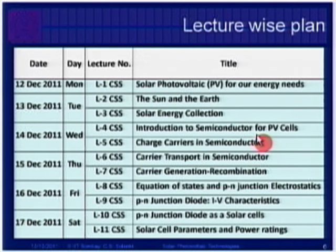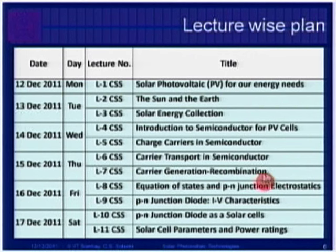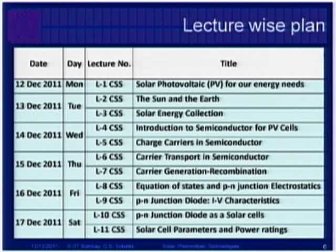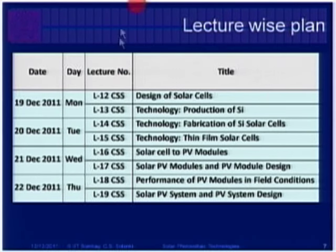Then we go on to introduction of semiconductors for solar cells, charge carrier transport — how electrons move in a semiconductor — and how electrons and holes are generated. We cover carrier generation and recombination, the reverse process of generation, then the p-n junction device and how it acts as a solar cell. We come to the application side — the main parameters of a solar cell, how to optimize and quantify them, and how to design a solar cell for maximum efficiency, current, and voltage.